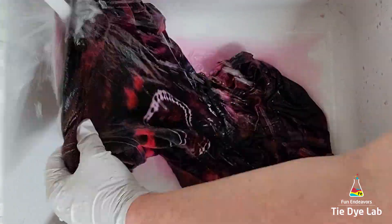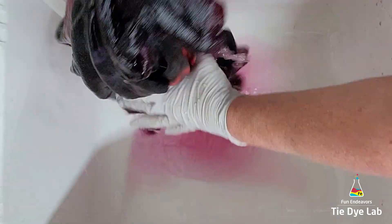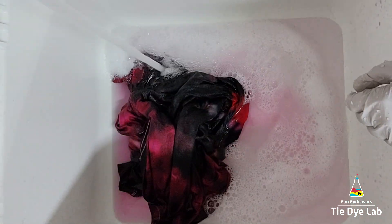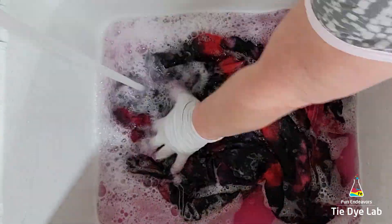Then I put the shirt into my washing machine along with a little bit of Dharma's textile detergent and I washed it on a hot water cycle. And after the shirt was washed and dried this is what it looks like.